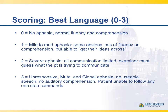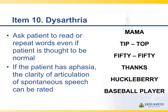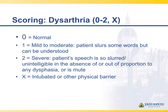Aphasia is scored on a scale of zero to three. Zero is normal, and three is mute or globally aphasic. Distinguishing between a one and a two is more subjective — in general, if they're missing more than two-thirds of naming objects or only understanding a few simple one-step commands, I'd call them severe and score them a two. Item 10 is dysarthria, assessed by listening to the patient and having them read from the cards. You can't score this if they're intubated.